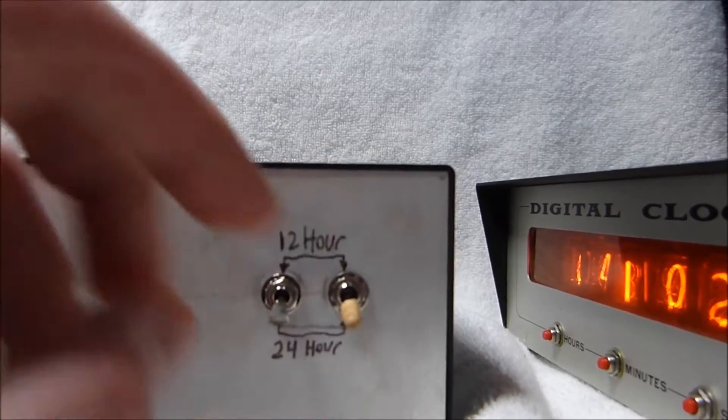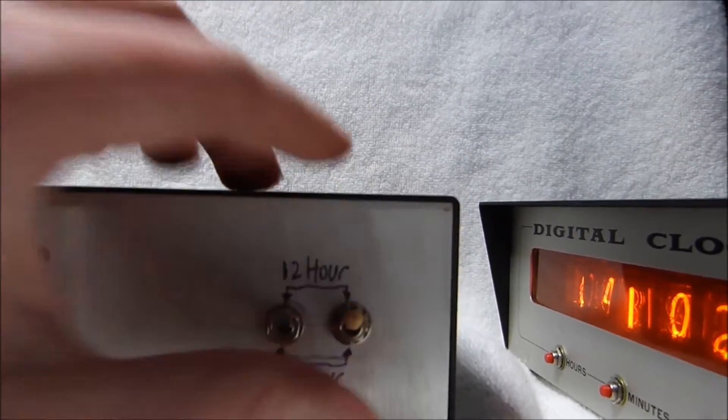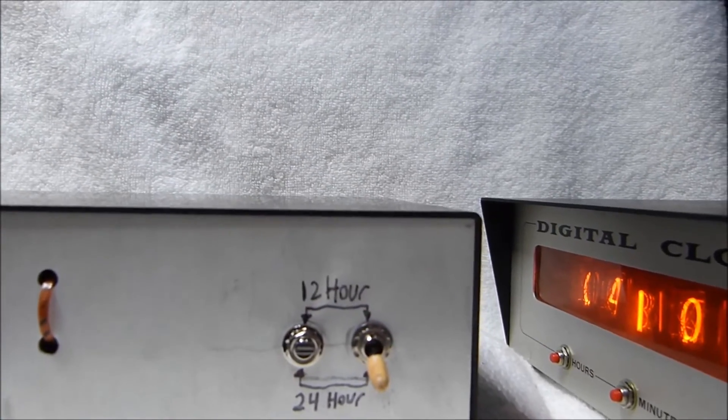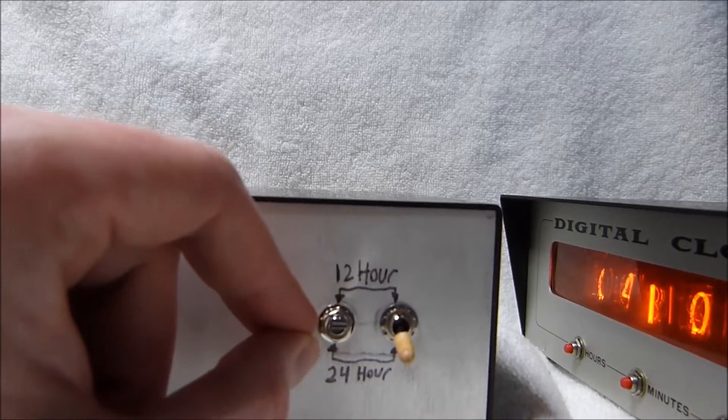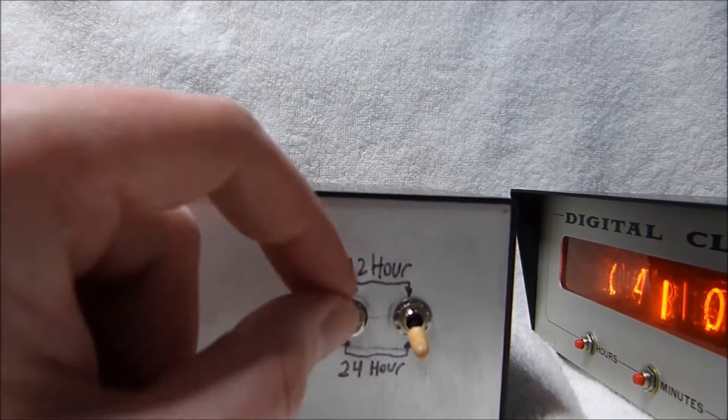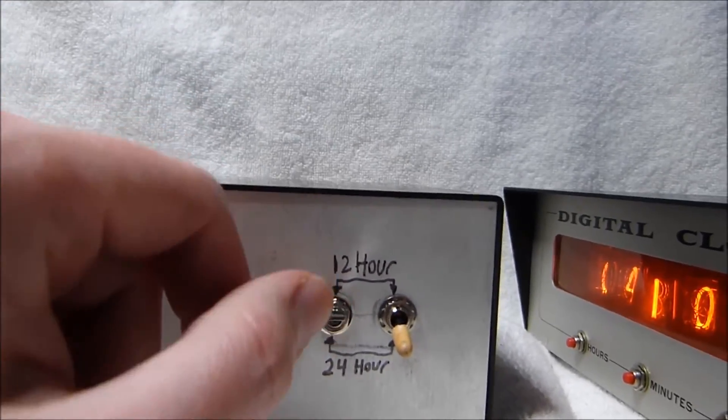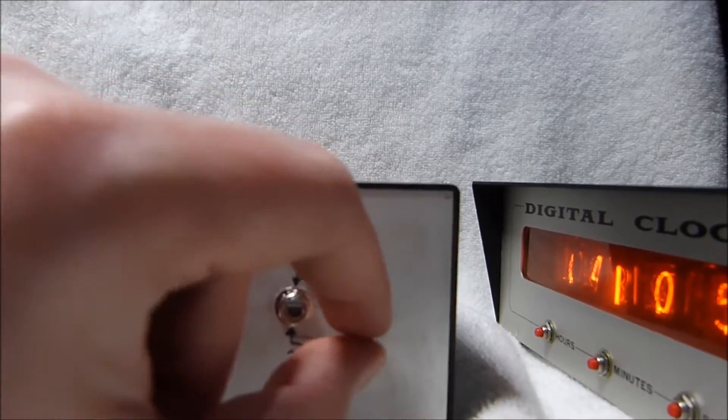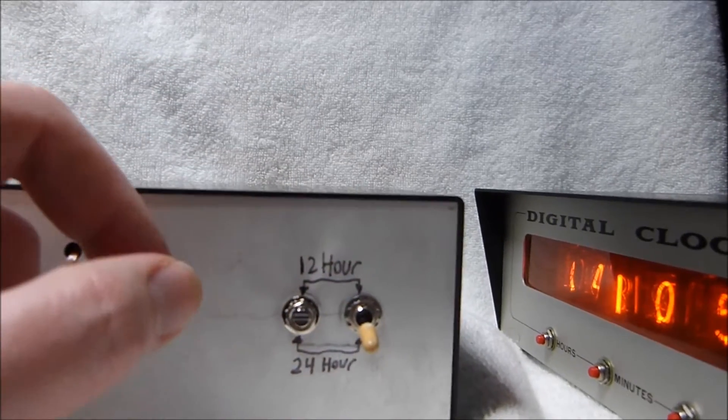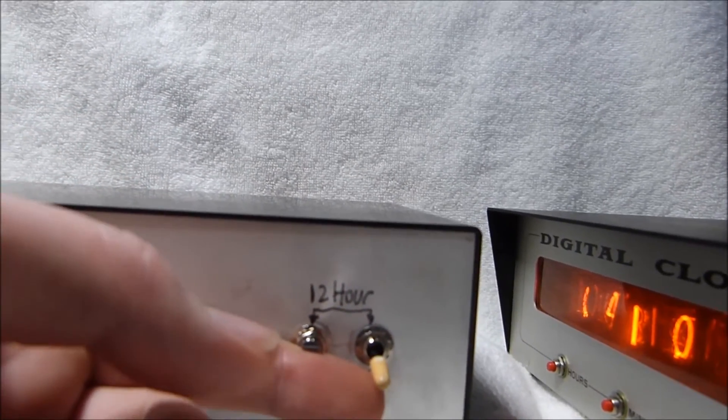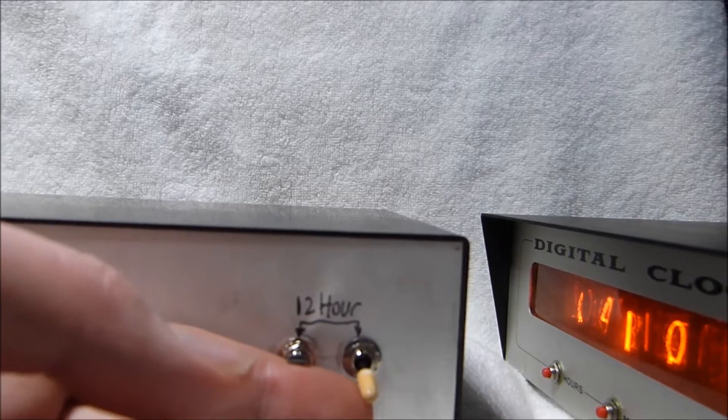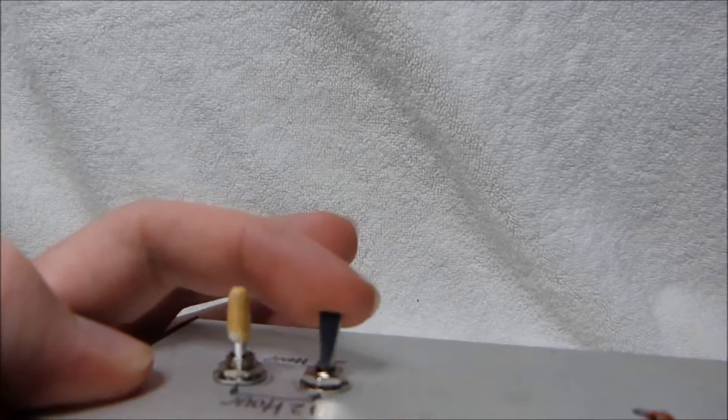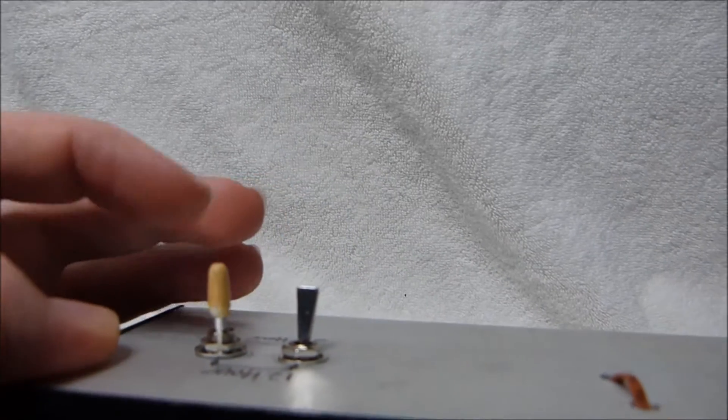You have to set them both up or down. If you set them like this or like this, you'll get kind of weird operation out of the clock. This one sets the start point basically of counting, and then this one is like 12 or 24 hour essentially. If you have them like this, it'll do odd things like count up to 13 and then roll over to zero. I'll put this switch on 24 hours and put this one on 12.